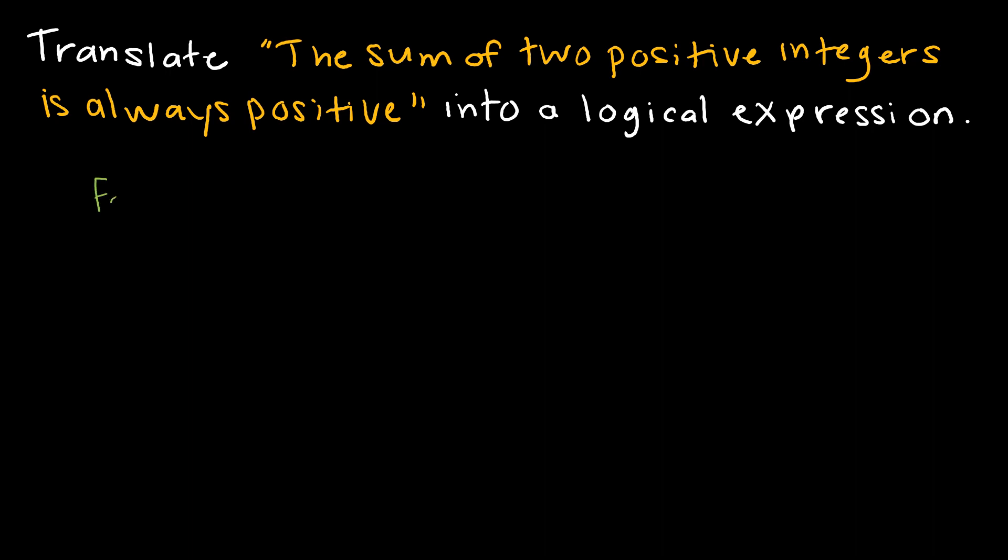So I can say for all positive integers x and y, x plus y is greater than zero. So this statement says that the sum of my values is positive, always positive. And over here I'm basically telling you what x and y could possibly be.